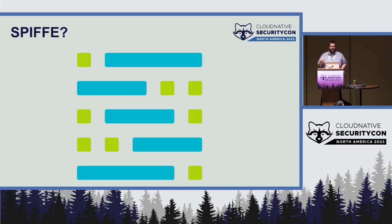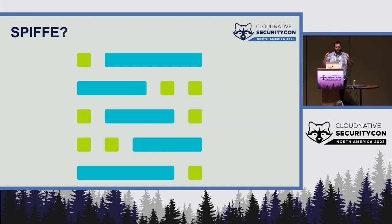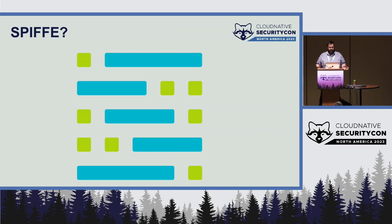This is where SPIFFE comes in. SPIFFE started as a project in 2016 by Joe Beta, trying to get organizations to bring together all our knowledge about identity and security into a single project. SPIFFE stands for the Secure Production Identity Framework for Everyone. They wanted to leverage existing tooling, primarily using X.509 certificates and JWTs — JSON web tokens. X.509 certificates are preferred as they're more secure and can be rotated and expired, and a lot of systems will already accept them as identity.